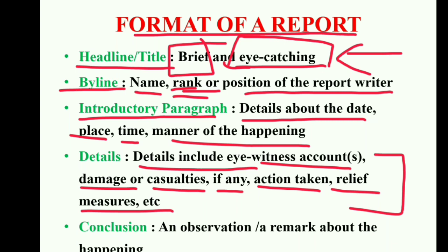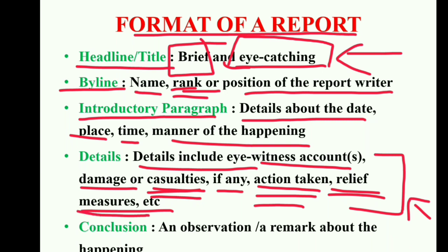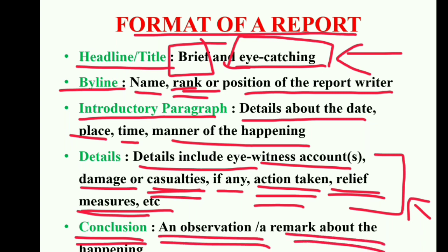These details are based on some incident. If there is an accident between two vehicles, then how the accident happened, how many casualties were there, what action was taken by the police, and any relief measures — you have to mention those. In the conclusion, there should be an observation or remark about the happening. You can include something from your side in conclusion, but it should not be too personal.